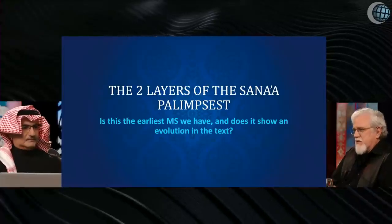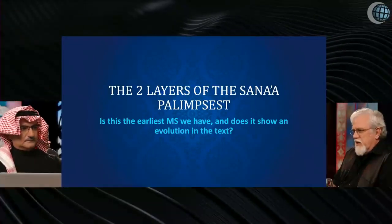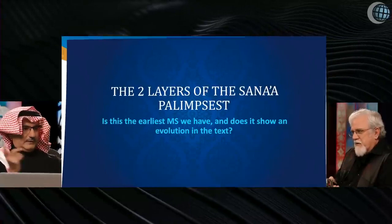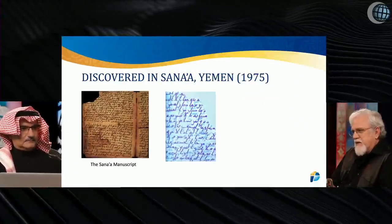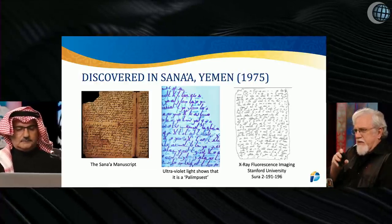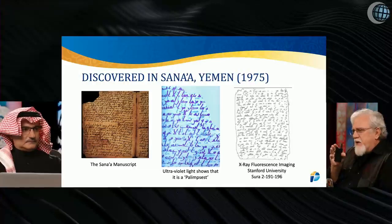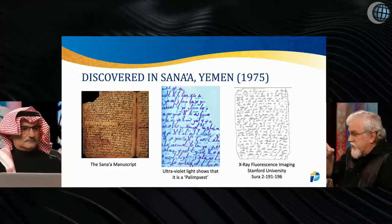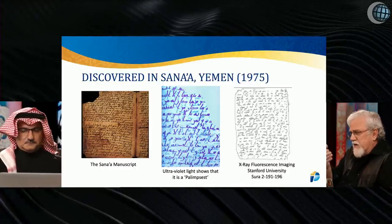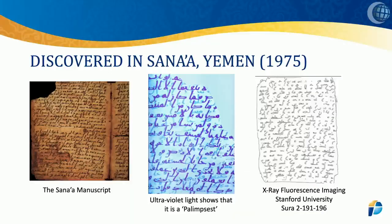You can see the two layers of the Sanaa palimpsest. Is this the earliest manuscript we have? Does it show an evolution in the text? That's the question. Here we go — this is a picture of it. You can see on the left there is the Sanaa manuscript; that's the upper layer. But when you look at it under ultraviolet light, you will see there are two layers. There's the lower layer, a little faded, and then the upper layer — the later layer. It's been wiped off and then rewritten over top. By separating these two layers on the right, you see the lower layer, and you can read it and see that there are differences.